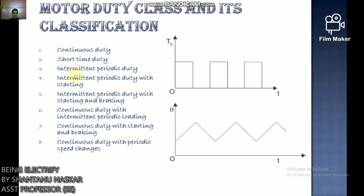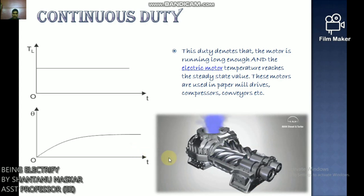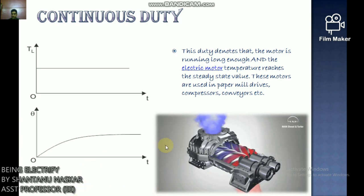The 8 duty classes are: (1) Continuous duty, (2) Short time duty, (3) Intermittent periodic duty, (4) Intermittent periodic duty with starting, (5) Intermittent periodic duty with starting and braking, (6) Continuous duty with intermittent periodic loading, (7) Continuous duty with starting and braking, and (8) Continuous duty with periodic speed change. First: Continuous duty — the motor runs long enough for temperature to reach steady state, used in paper mill drives, compressors, and conveyors.